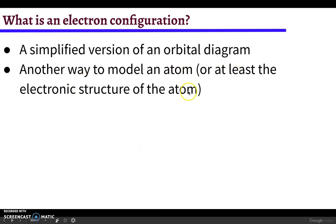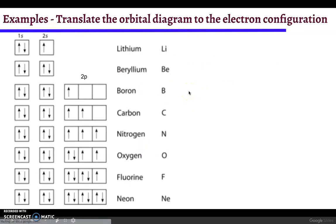These are some of our examples from the orbital diagrams and we're going to translate these orbital diagrams into electron configurations. Here for lithium we can see that it has two electrons in the 1s orbital. Remember the s orbitals are like the spherical shaped ones, and it has one electron in the 2s orbital.